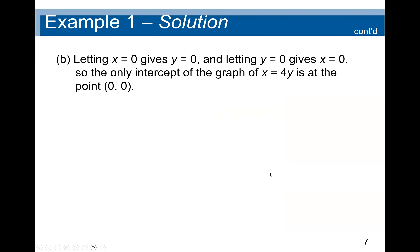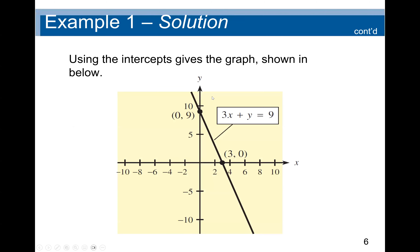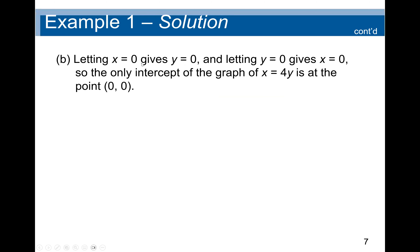Now let's look at the second question: x = 4y. If we set x equal to zero, that gives y equal to zero. If we're looking for the x-intercept, y equals zero, so x equals four times zero, which is zero. If we're looking for the y-intercept, x equals zero, so y equals zero divided by four, which is also zero. Letting y equal to zero gives x equal to zero, so the only intercept of the graph of x = 4y is at the point (0, 0).